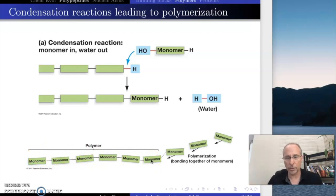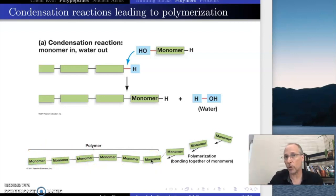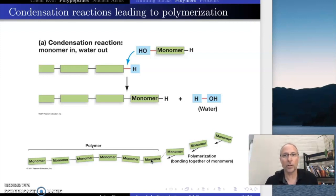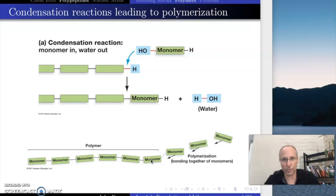Seven monomers, we produce six waters. Twenty-five monomers, we produce 24 waters. One hundred twenty-nine monomers, we produce 128 waters. If you've started doing the biomolecules lab, that number should be significant — it's something that you've seen before.